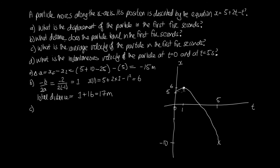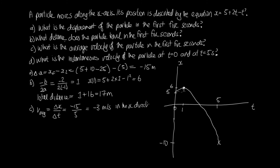Part c asks for the average velocity of the particle in the first five seconds. The average velocity equals the total change in displacement divided by the total time. The change in displacement was minus fifteen meters, and the time period was five seconds. So the average velocity is minus fifteen divided by five, which gives minus three meters per second in the x direction. The negative sign indicates the direction — the particle is moving back along the x-axis.